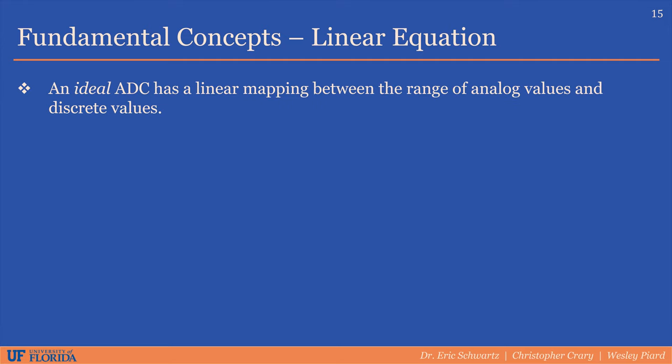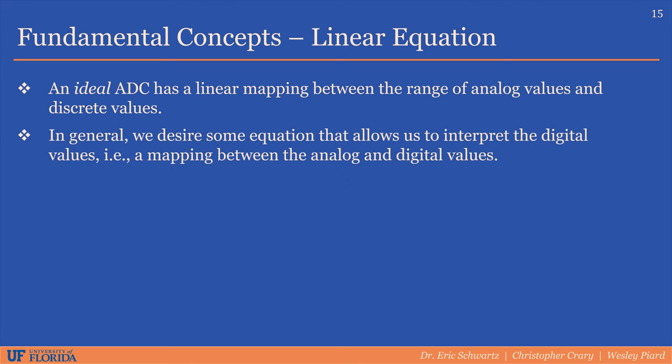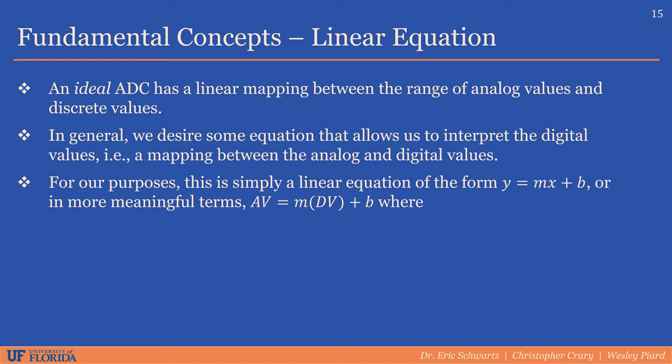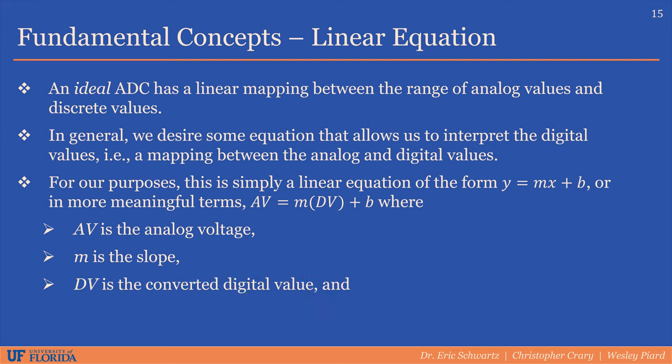An ideal ADC has a linear mapping between analog and digital values. We desire an equation that allows us to interpret digital or analog values and map to the other domain. For our purposes, this is simply the linear equation y = mx + b, or in more meaningful terms: AV (analog voltage) equals m (slope) times DV (digital value) plus b (vertical axis intercept), if applicable.